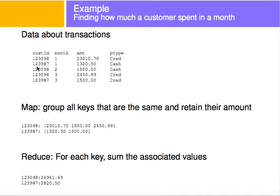It's going to convert it into key value pairs, which by default are going to be the line number as the key and then the value is going to be whatever's in the line. And it's going to take this and produce another key value pair where you have the customer ID and just the amount spent on that month for every month. So you'll group all the keys that are the same and you will retain their amounts in this way.